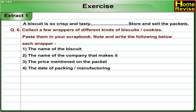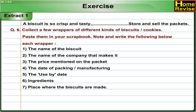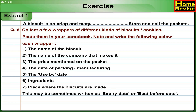4. The date of packing or manufacturing. 5. The use-by date. 6. Ingredients. 7. Place where the biscuits are made. This may sometimes be written as expiry date or best before date.